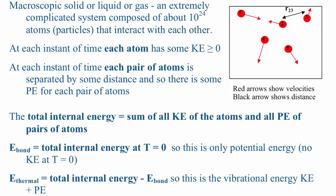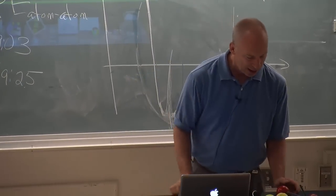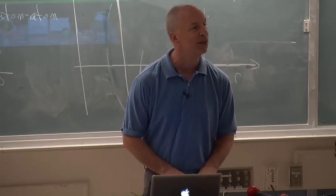You probably already think of thermal energy, since it depends on temperature, as being very small when the temperature is very small. If the temperature is zero — absolute zero, in Kelvin — then we won't have any significant thermal energy. So the total internal energy at that point is just bond energy. This is almost a definition: at T equals zero, all you have is bond energy.